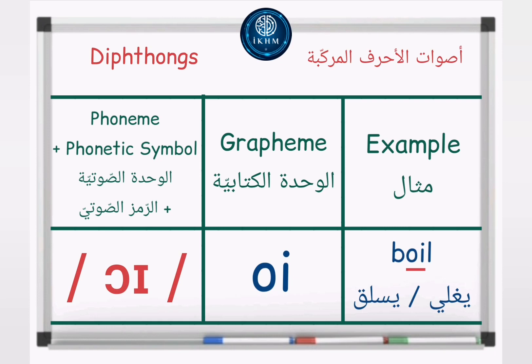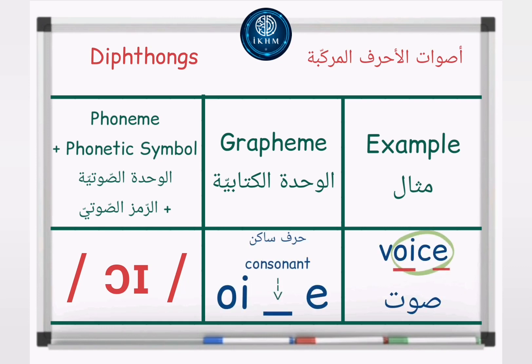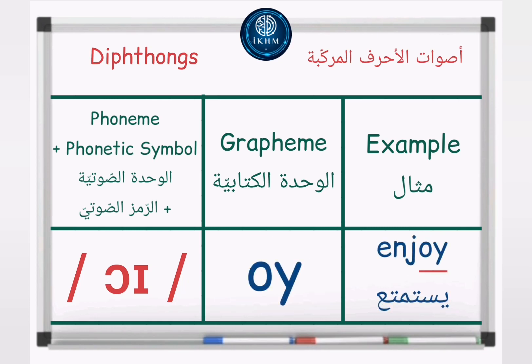Phoneme /ɔɪ/, phonetic symbol OI. Grapheme: letters O, I. Example: Boil — /ɔɪ/ — Boil. Grapheme: O, I consonant E. Example: Voice — /ɔɪ/ — Voice. Grapheme: letters O, Y. Example: Enjoy — /ɔɪ/ — Enjoy.